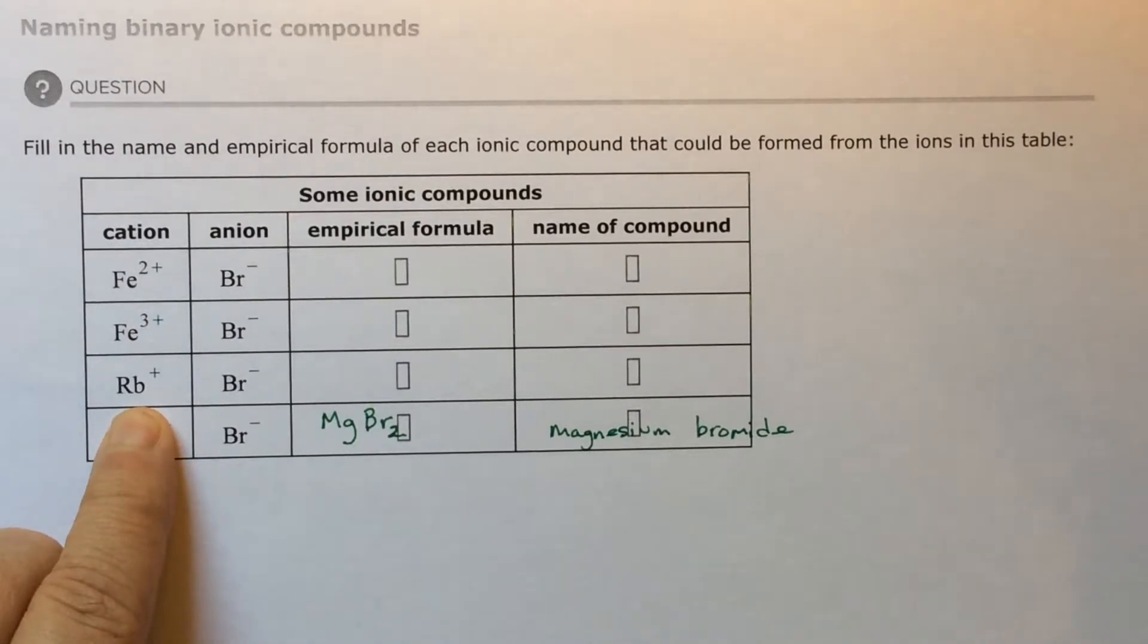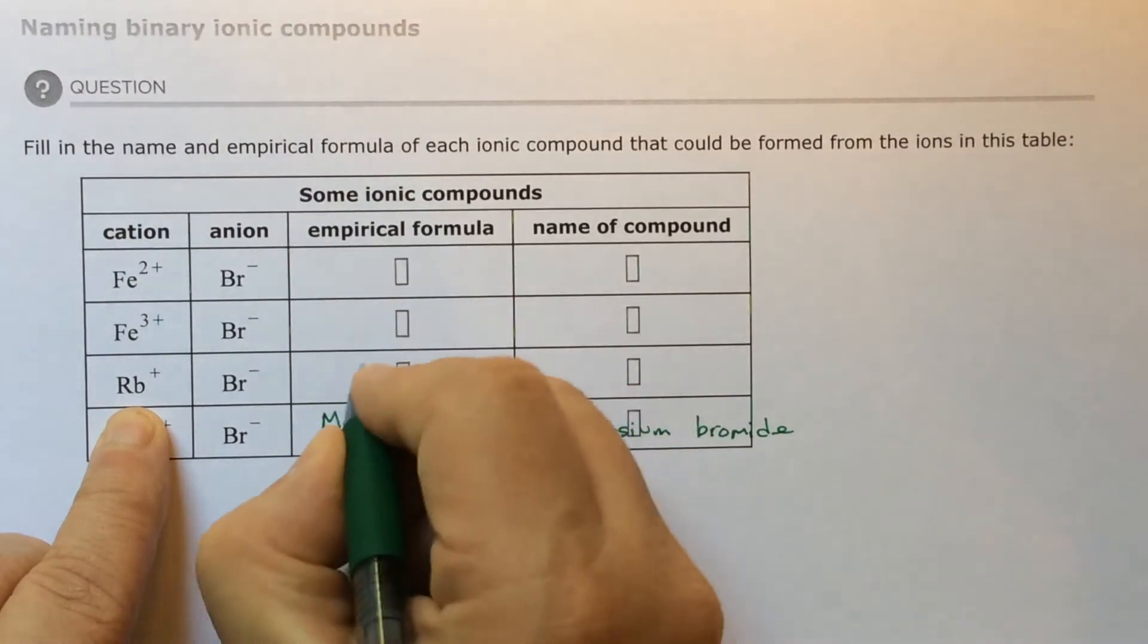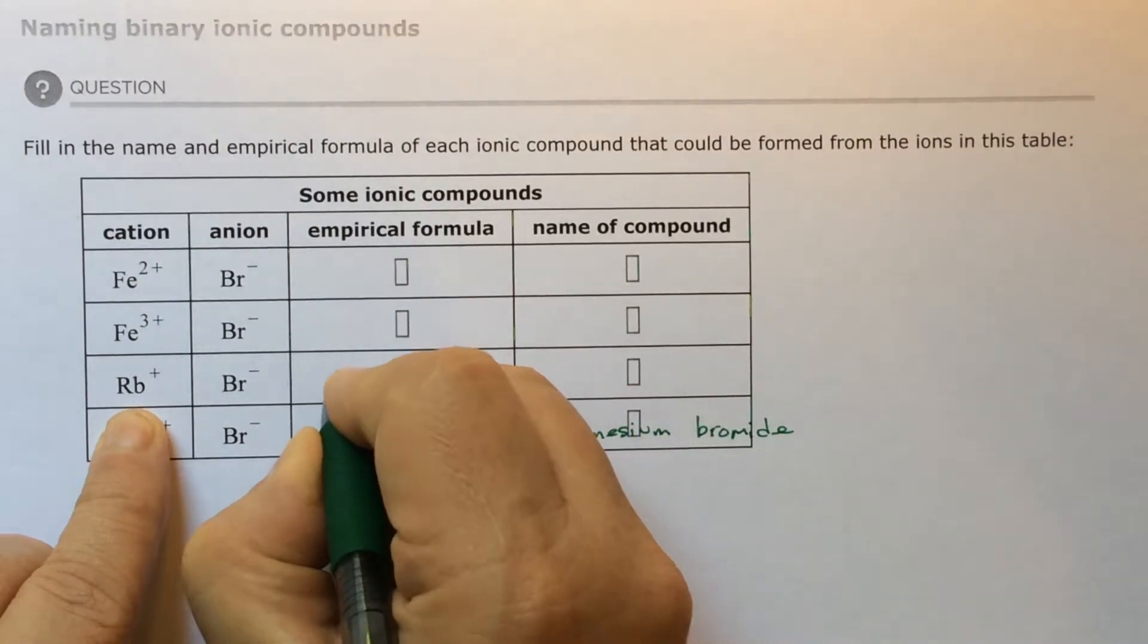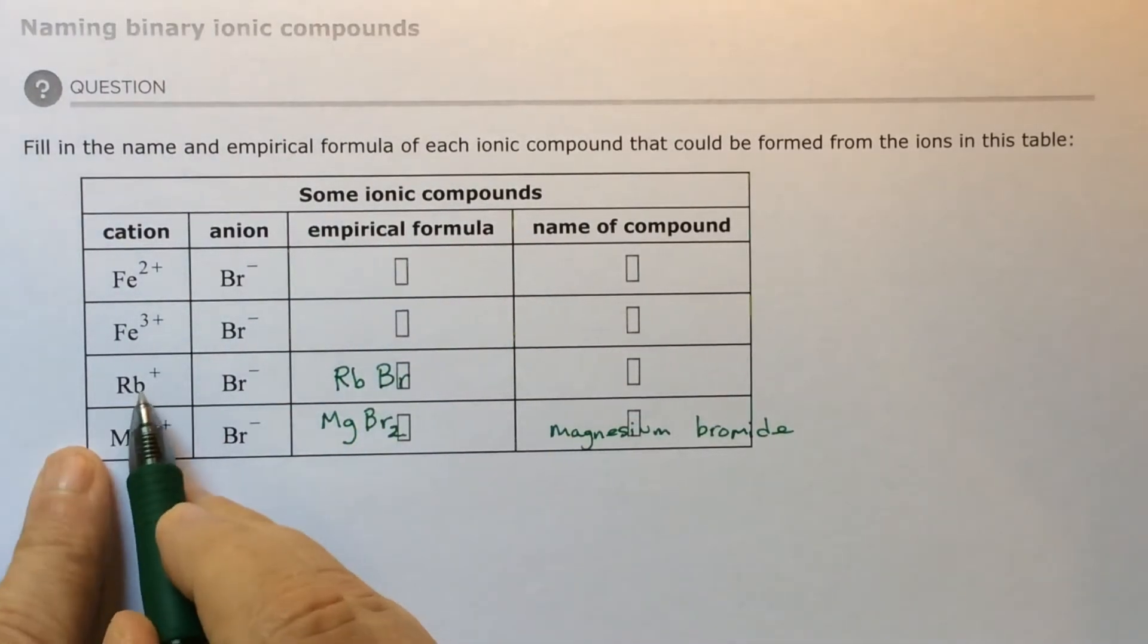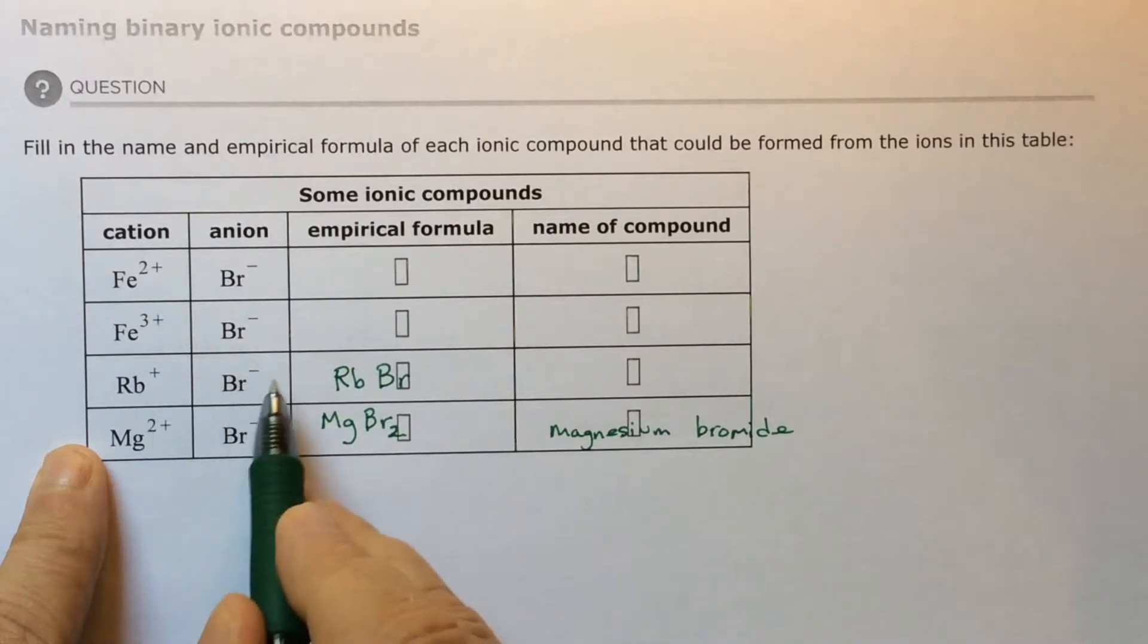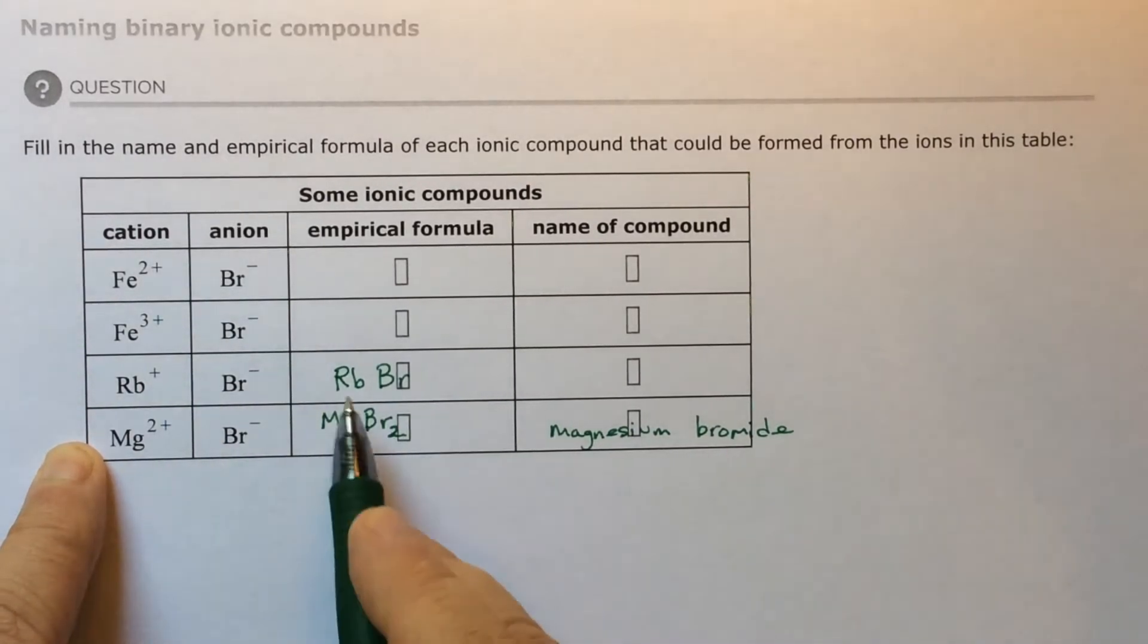Rubidium works the same way. Rubidium is in group one. These are representative elements, so there's no funny names. First let's make an empirical formula. I put rubidium first, bromine second. I've got one positive and one negative. They're already balanced. They already cancel down to zero. So it's just RbBr.